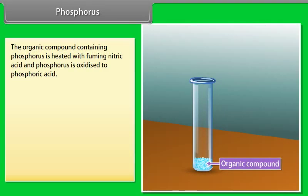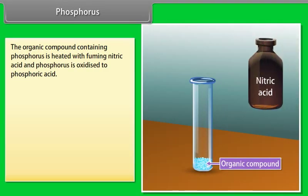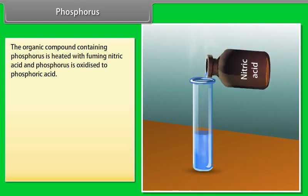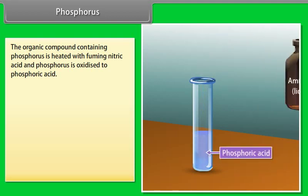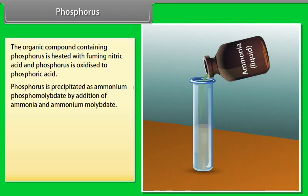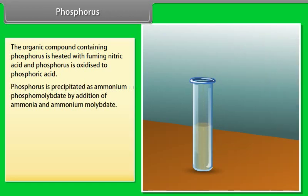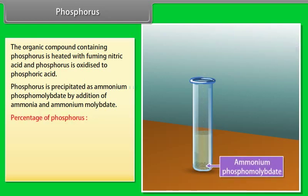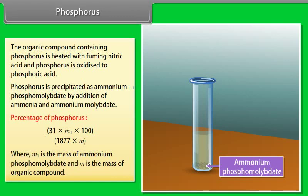Phosphorus: the organic compound containing phosphorus is heated with fuming nitric acid and phosphorus is oxidized to phosphoric acid. Phosphorus is precipitated as ammonium phosphomolybdate by addition of ammonia and ammonium molybdate. Percentage of phosphorus = (31 × M₁ × 100) ÷ (1877 × M), where M₁ is the mass of ammonium phosphomolybdate and M is the mass of organic compound.